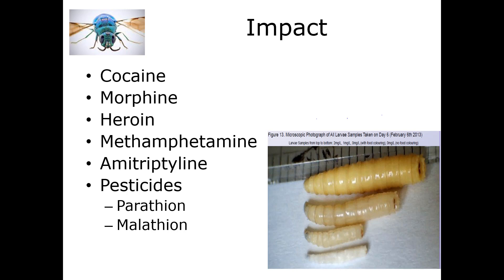Amitriptyline, a common antidepressant, showed no significant effects on most developmental stages, but it did cause a substantially longer post-feeding and pupal stage — the larvae just stayed in that post-feeding stage for a long time. So even with good developmental tables, you may overestimate the time of colonization, and larval mortality was really high. In blind studies attempting to calculate post-mortem interval using maggots fed on drug-contaminated tissues, there was a substantial underestimation of the PMI due to a general trend of maggots speeding through their development in response to drugs.